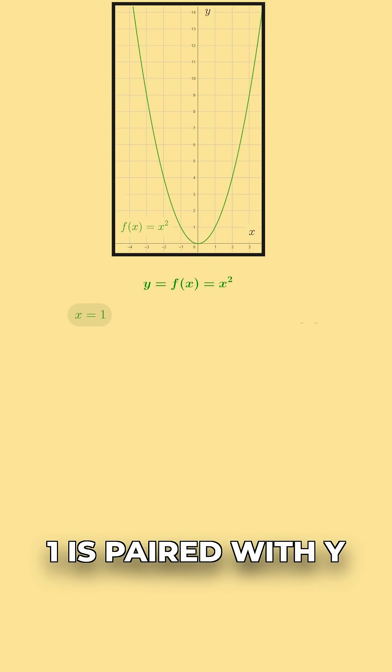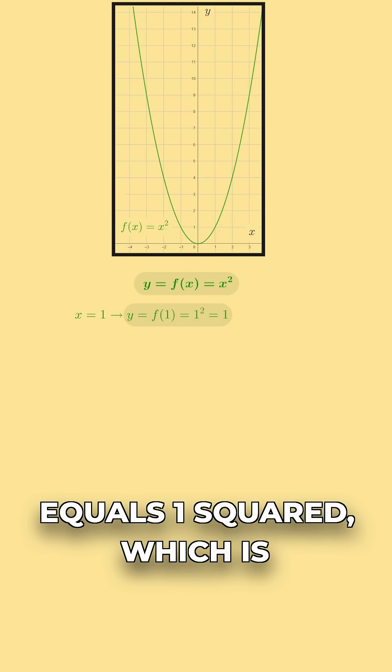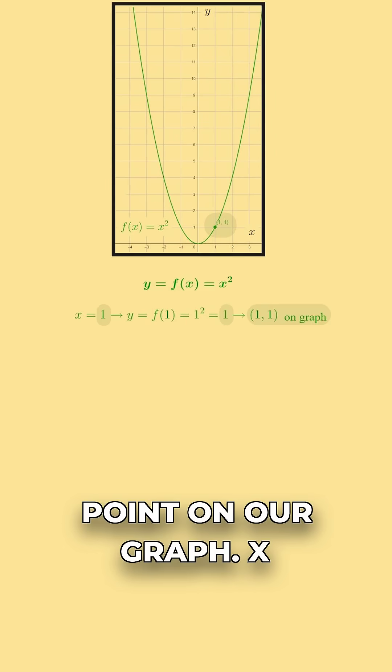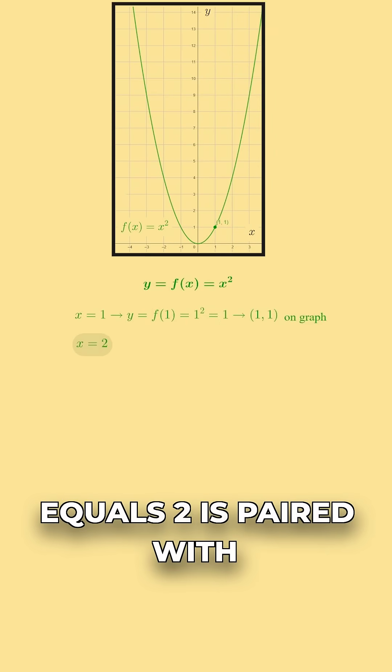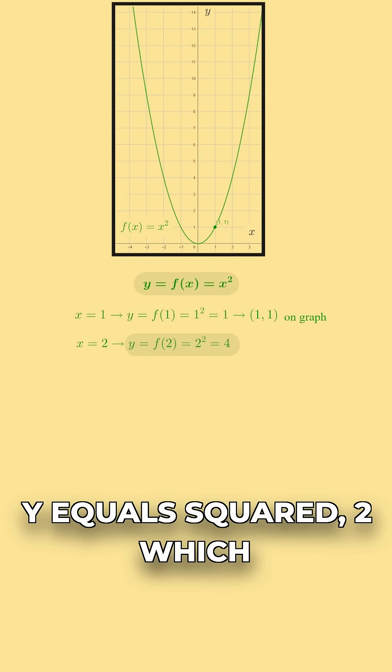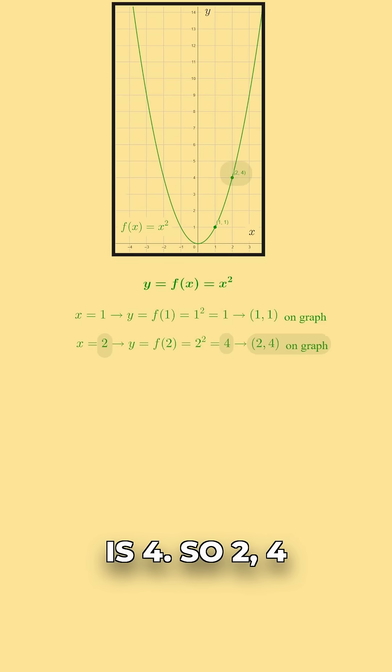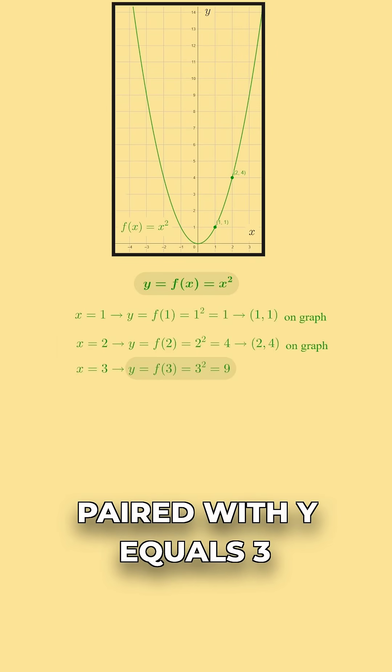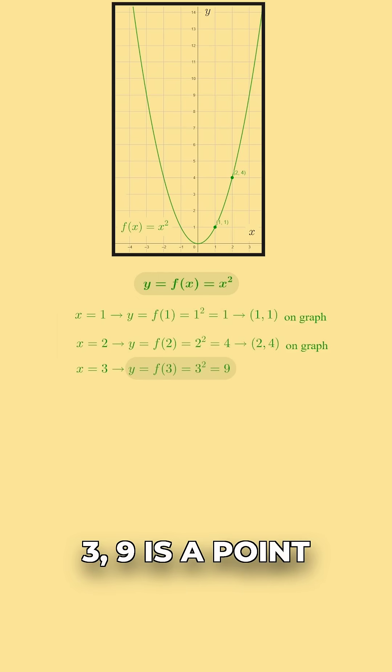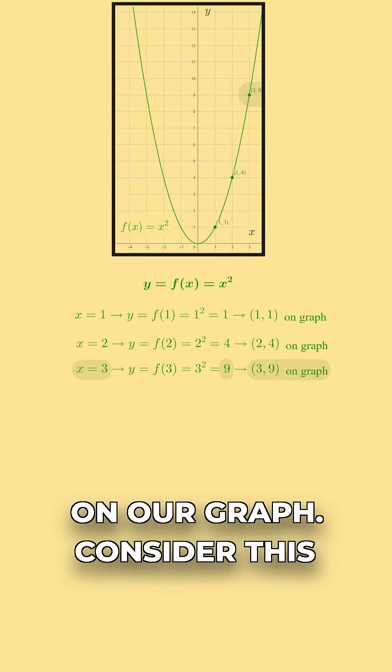x = 1 is paired with y = 1², which is 1. (1,1) is a point on our graph. x = 2 is paired with y = 2², which is 4, so (2,4) is a point on our graph. x = 3 is paired with y = 3², which is 9, so (3,9) is a point on our graph.